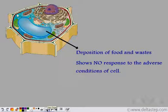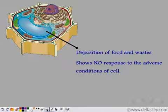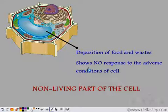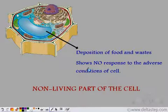The vacuoles are just a deposition of food and waste materials. They do not show any response to the adverse conditions of the cell and do not provide the cell with the food stored in them. Hence, the vacuoles are the non-living parts of the cell because they do not take part in any decision making — any food and waste particle can just fuse with the vacuole, and these particles cannot be retrieved again later.